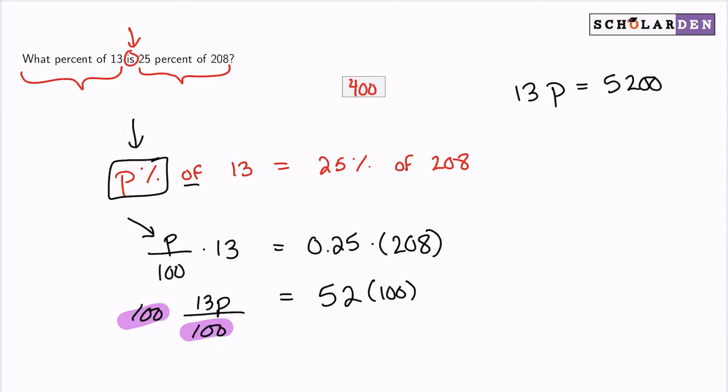And then lastly, what I can do is divide both sides by 13. So again, the 13s cancel leaving me with P equals 400, because 52 divided by 13 is 4. And then we have the two zeros, or you can just use your calculator, but P equals 400.